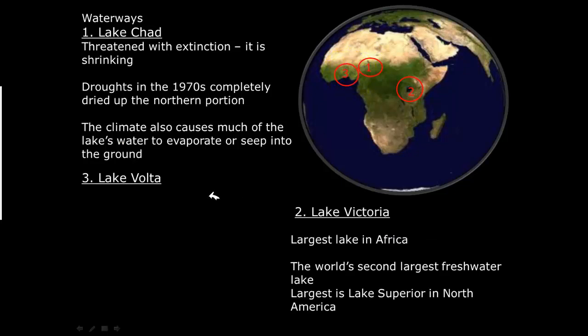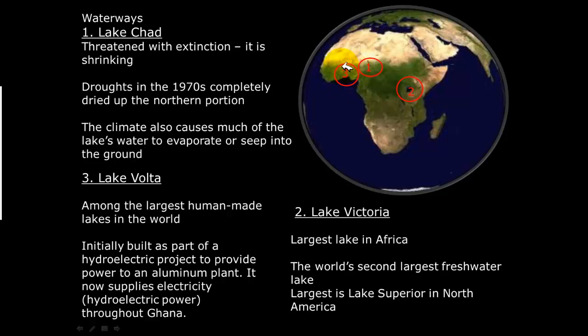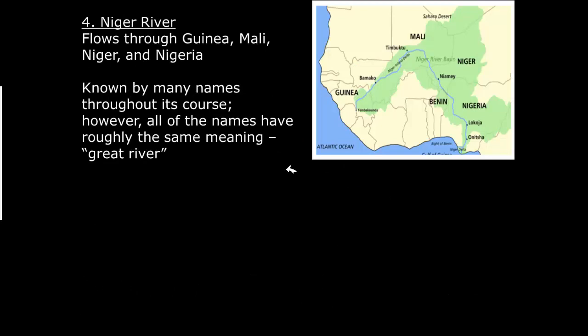The third waterway is Lake Volta, one of the world's largest man-made lakes. It was initially built as part of a hydroelectric project to supply the region with power — similar to how Niagara Falls uses flowing water to push turbines and generate electricity. It started as a small-scale plant to power a local aluminum plant, but has since been expanded to provide power throughout Ghana. Lake Volta is located right in this area.